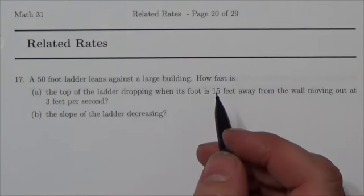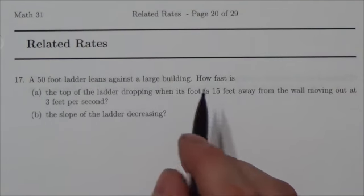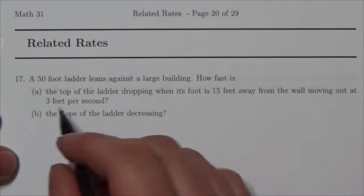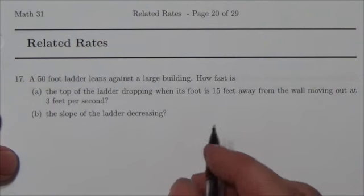Alright, this related rates problem says a 50-foot ladder leans against a large building. How fast is the top of the ladder dropping when its foot is 15 feet away from the wall, moving out at 3 feet per second? And then the second part here is how fast is the slope of the ladder decreasing?